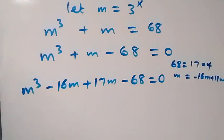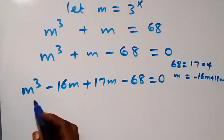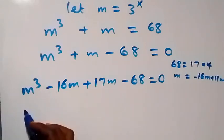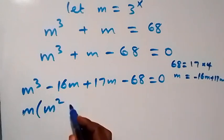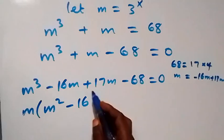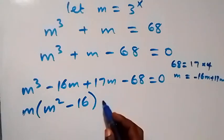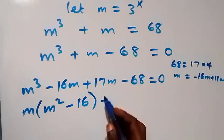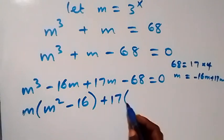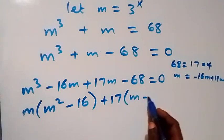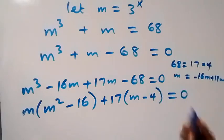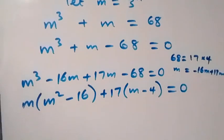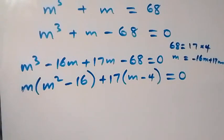From here we can factor m out, giving m times bracket m squared minus 16, close bracket. Then we factor 17 out, giving plus 17 times bracket m minus 4, equals zero.